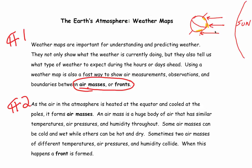In understanding what's happening here, no matter where the Earth is in its orbit around the Sun, the equator gets more sun no matter what the season. So the atmosphere above the equator becomes more consistently warmed than the atmosphere at the poles.